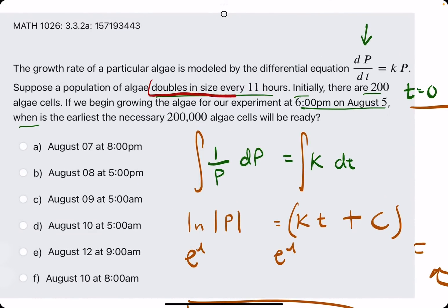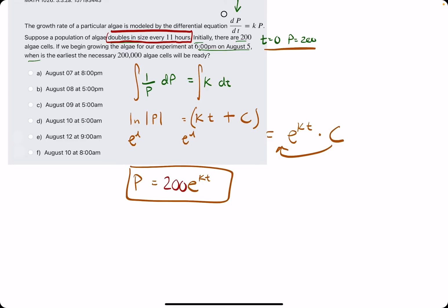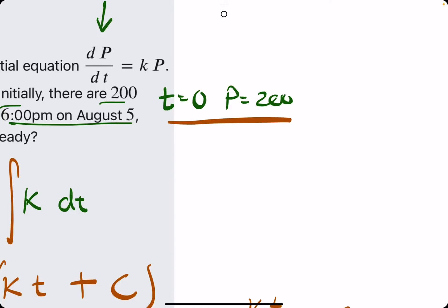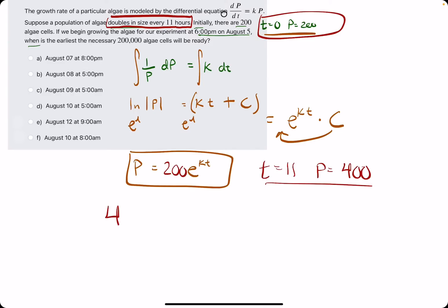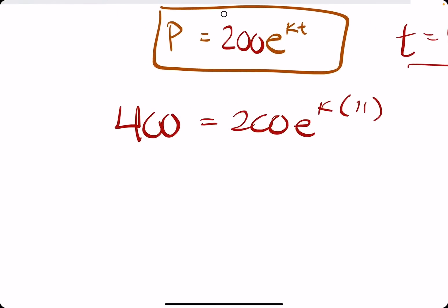So we have 200 E to the K T. Then we use this. It doubles in size every 11 hours. So what that means is we can set up another kind of ordered pair situation like this. So if it doubles in 11 hours or every 11 hours, we can say that when T equals 11, then the population is doubled from its initial 200. So now it's 400. So we do the same process, plug in 400 for P. We have it equal to 200 E to the K, which we don't know, times 11. And so what we'll do is solve this for K.